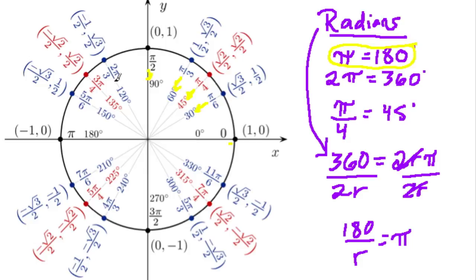2 pi over 3 is 120. 3 pi over 4 is 135. 5 pi over 6 is 150. And pi is 180. So anyway, that's kind of what you're seeing in this diagram. You're seeing both degrees and radians.